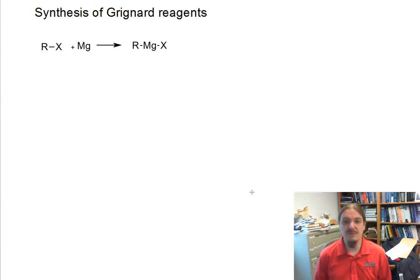Grignard reagents are made by the reaction of organohalides and magnesium, and from a very simplistic standpoint, it looks like the insertion of magnesium into the carbon-halogen bond.